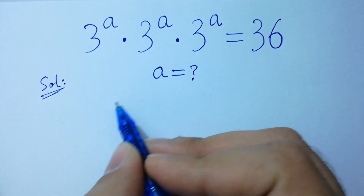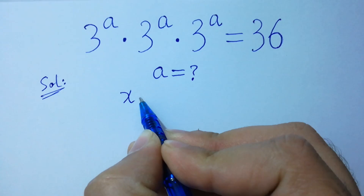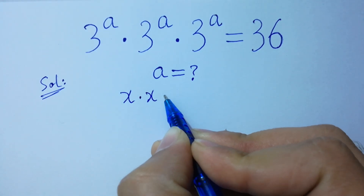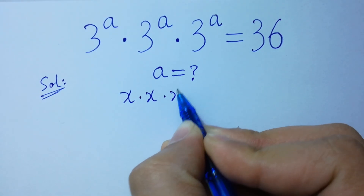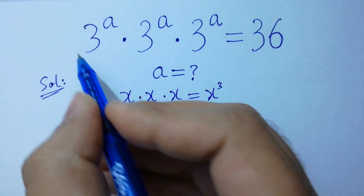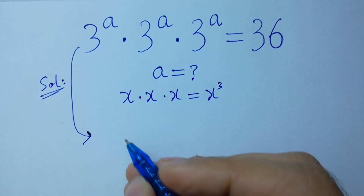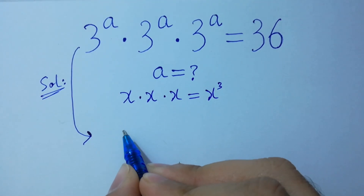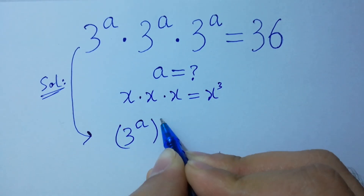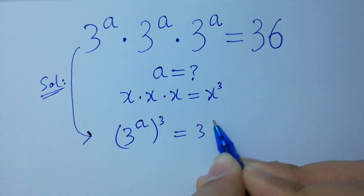As we know, x times x times x equals x cubed. So it will be 3 to the power a, cubed, equal to 36.